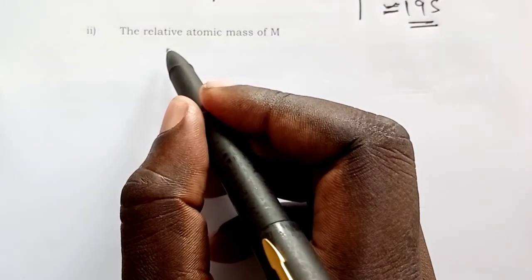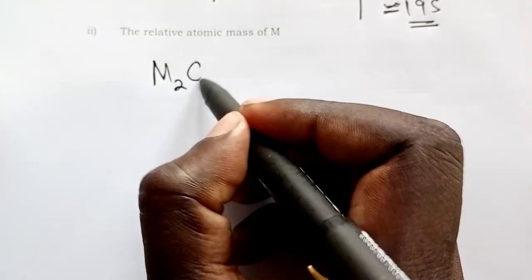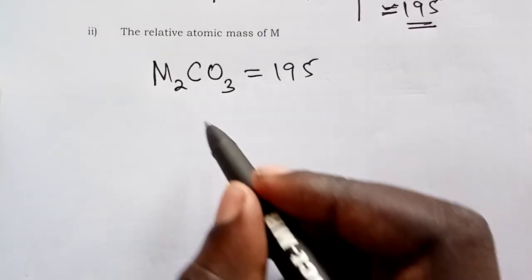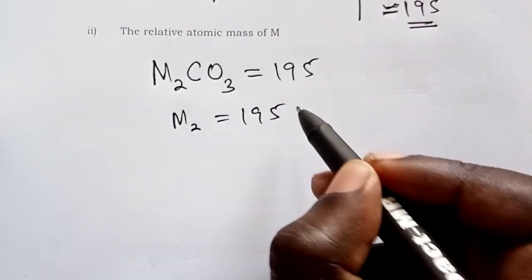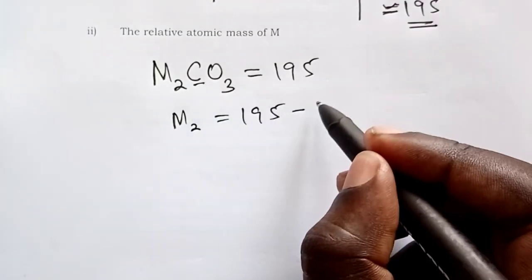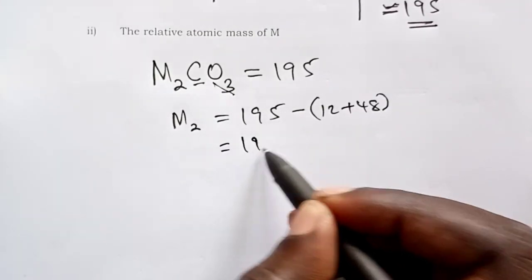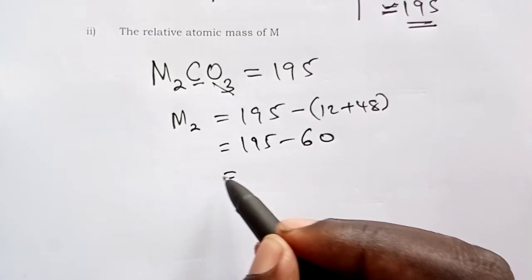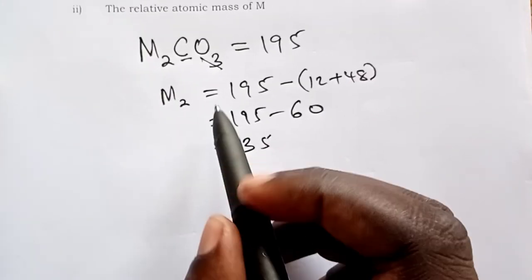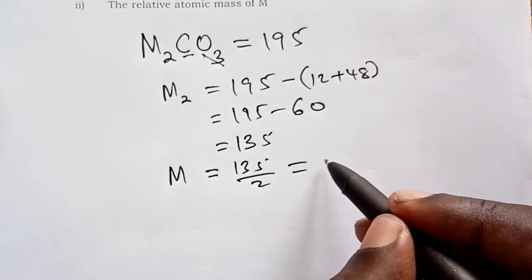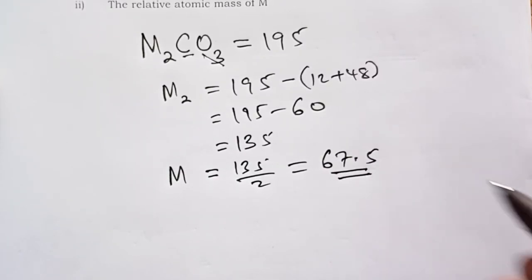Finally, calculate the relative atomic mass (RAM) of metal M. From the formula M₂CO₃, RFM = 195. So 2M + 12 + (3 × 16) = 195, meaning 2M + 60 = 195, giving 2M = 135, therefore M = 135 ÷ 2 = 67.5. That is the RAM of metal M in the carbonate M₂CO₃.